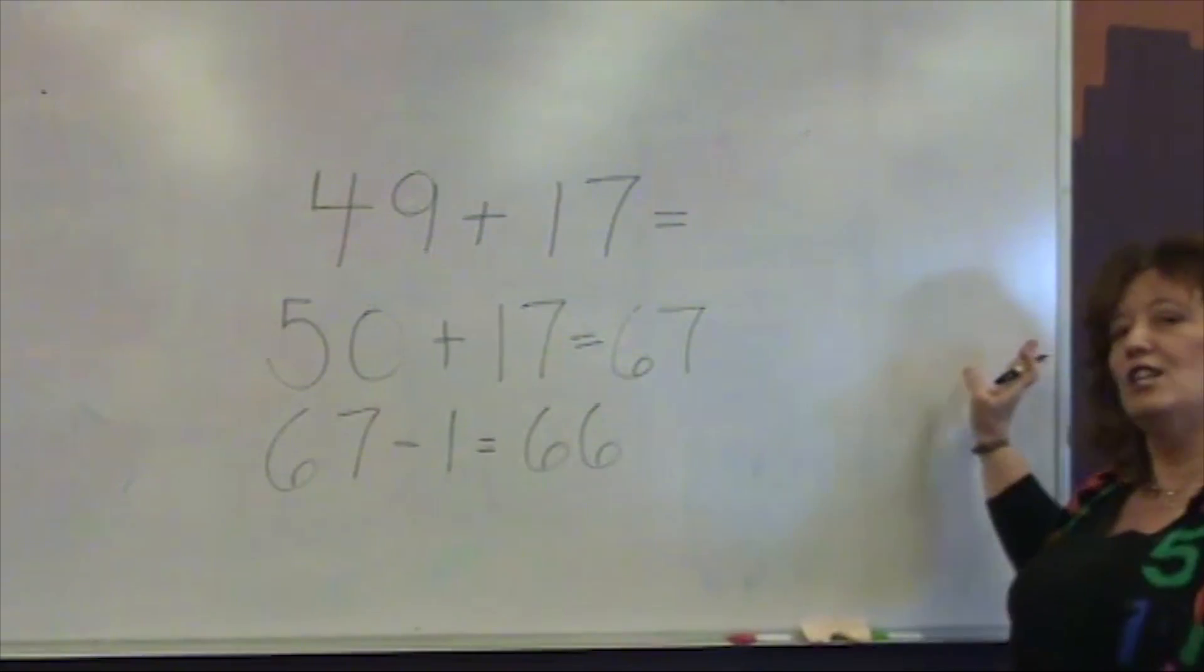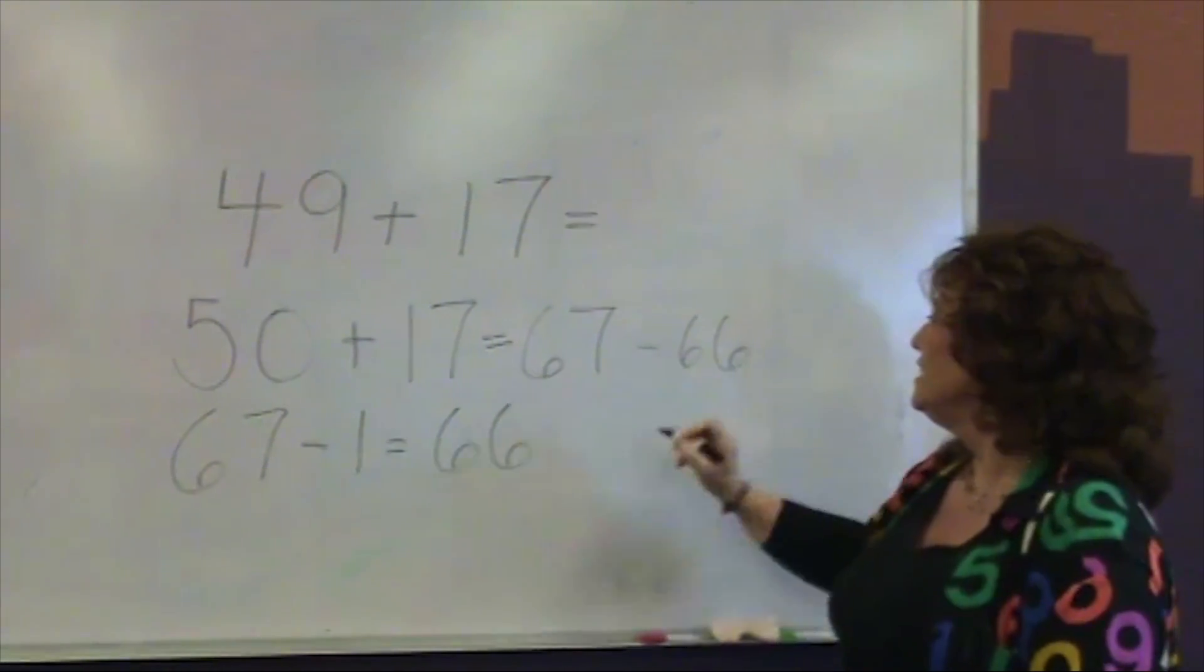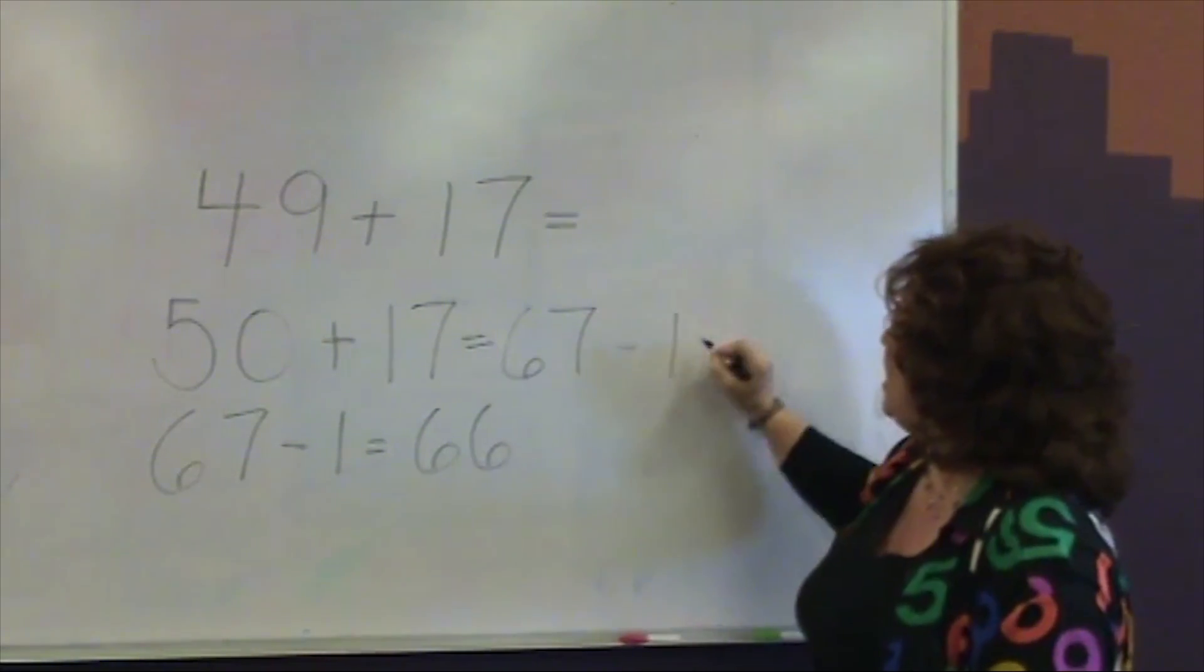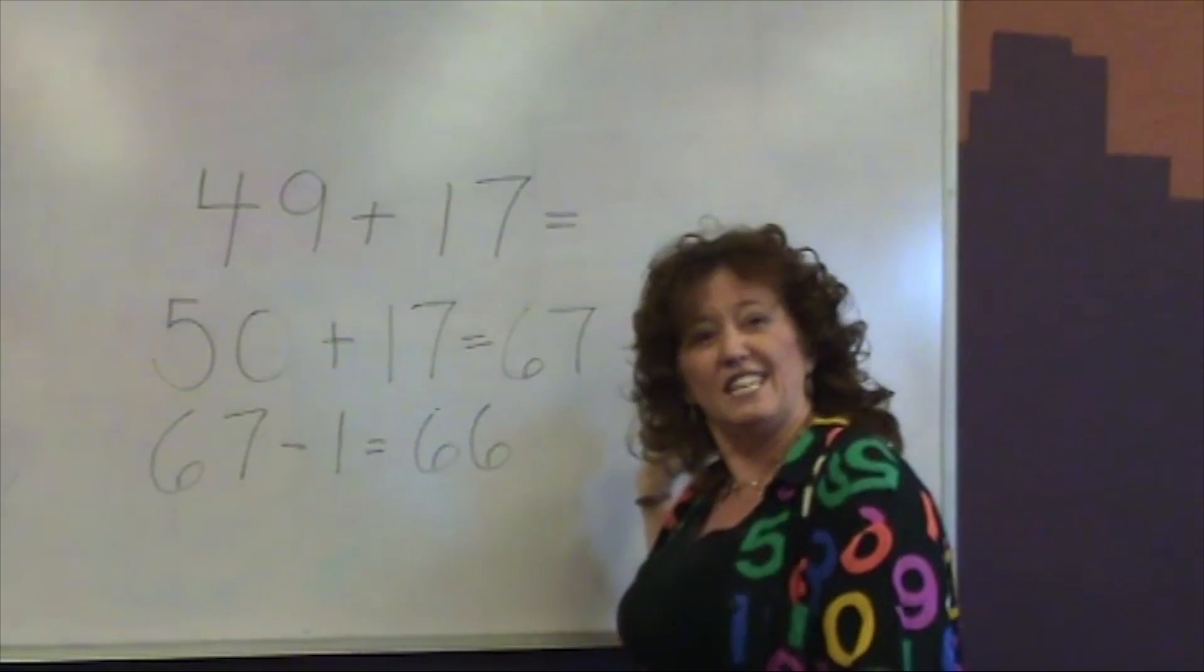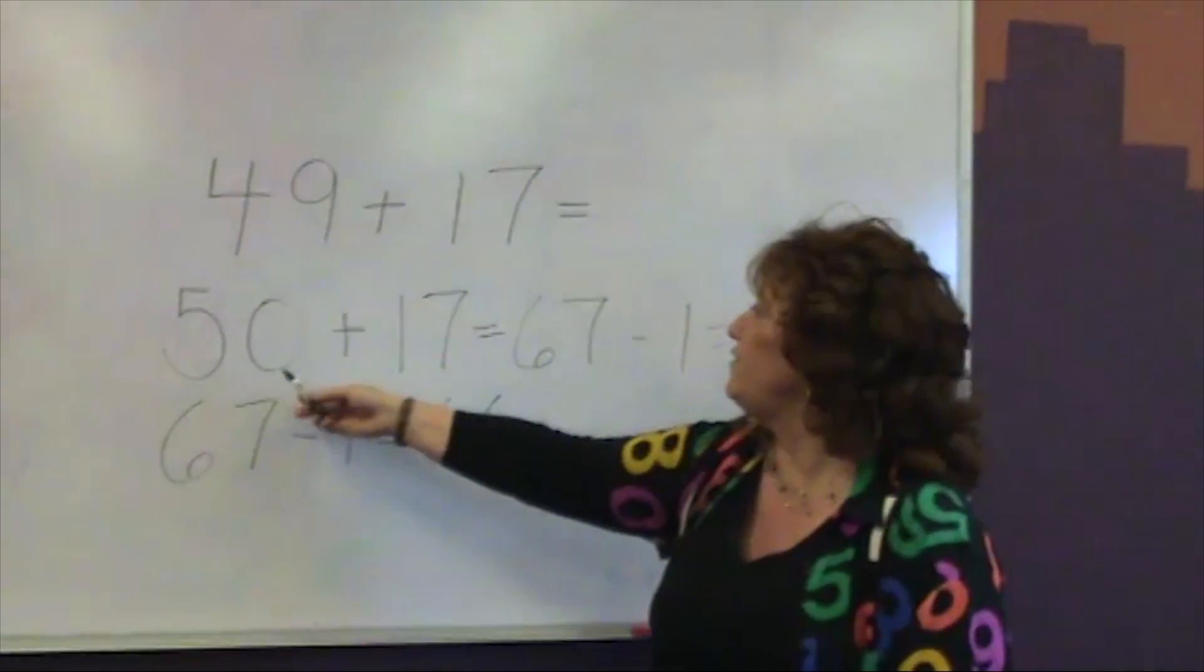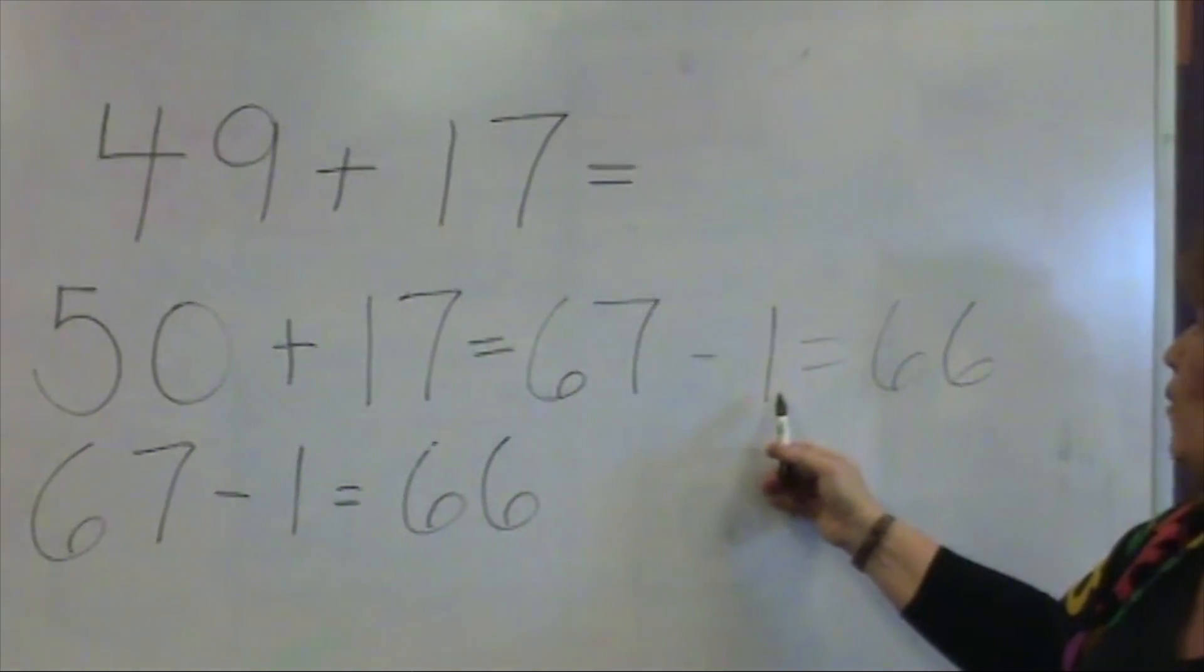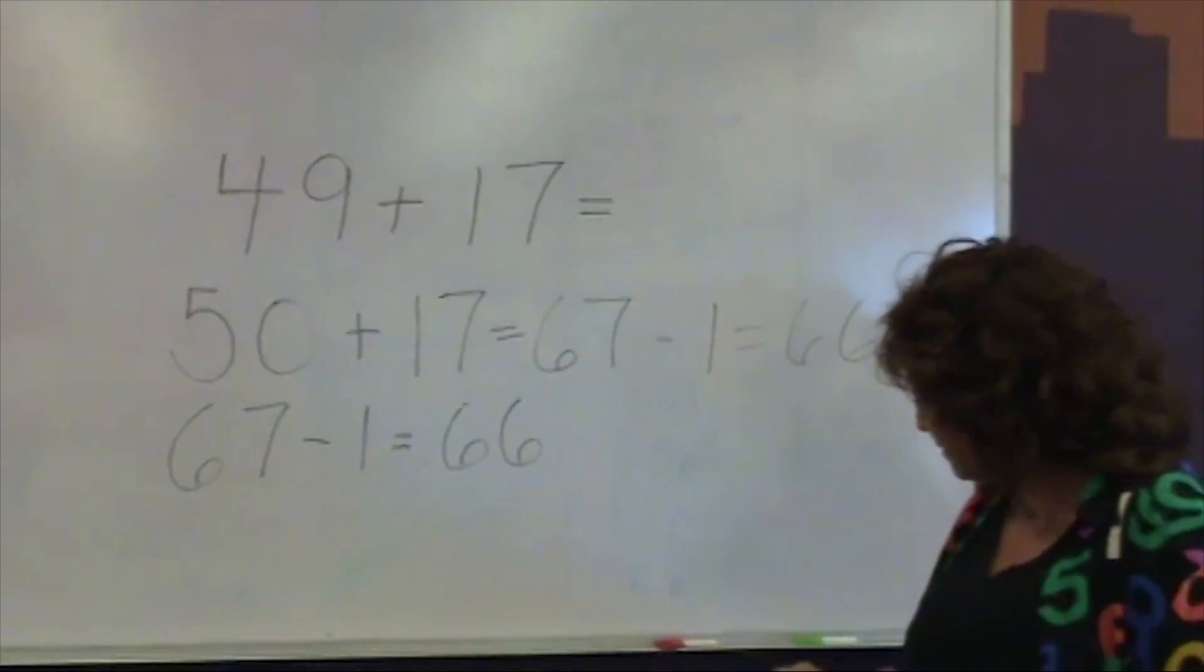I do it in two separate equations, not in a run-along sentence. Because if I wrote it here, take away 1, whoops, excuse me. If I wrote take away 1 here equals 66, that's like a run-on sentence in English. That's a run-on mathematics sentence. Look at that. 50 plus 17 does not equal 67 take away 1.